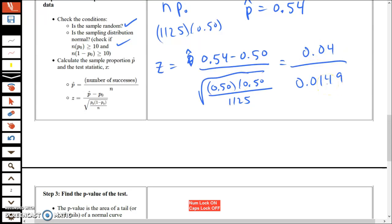Divide that out on a calculator. 0.04 divided by 0.0149 equals 2.6846 rounded off.